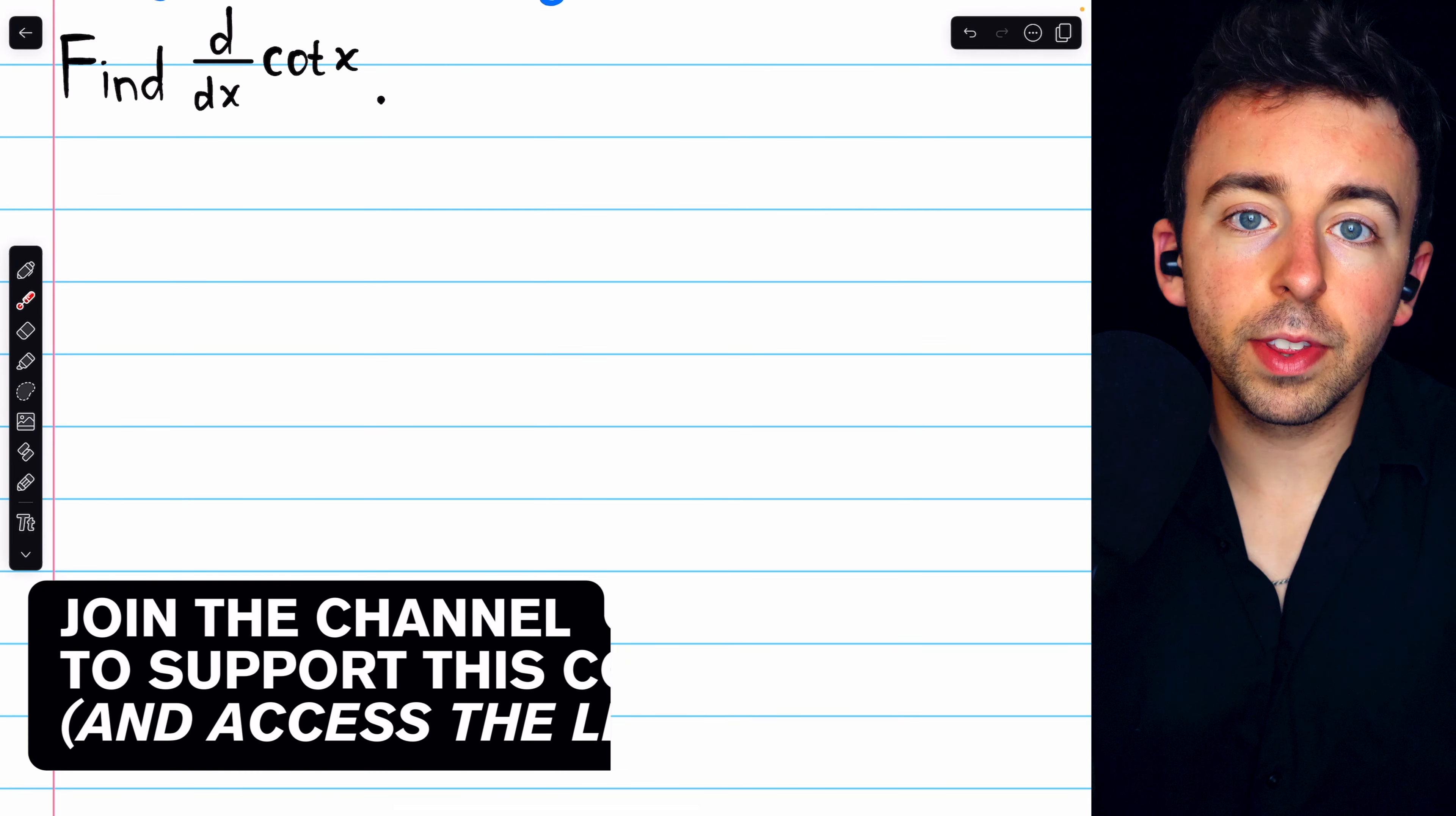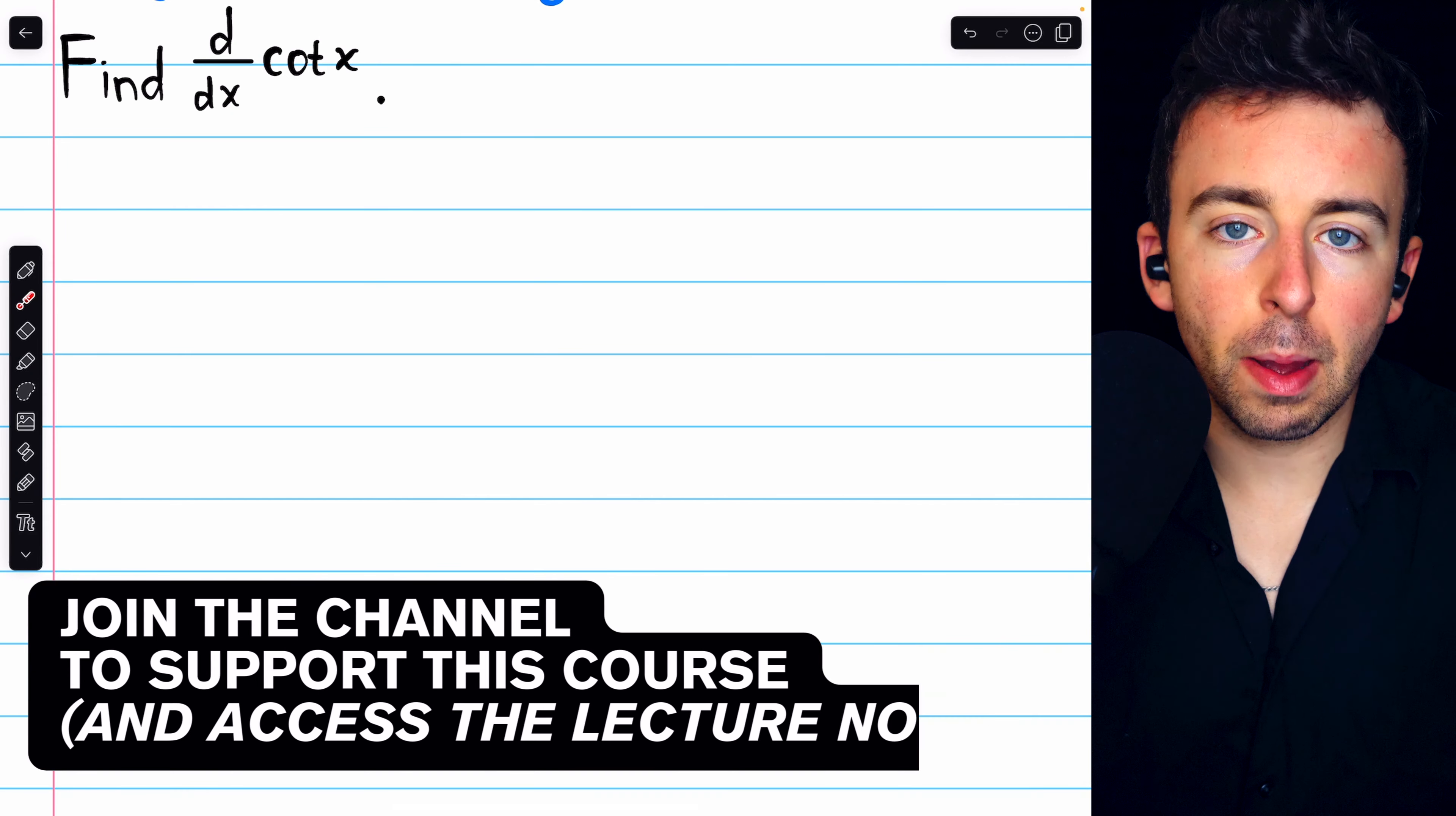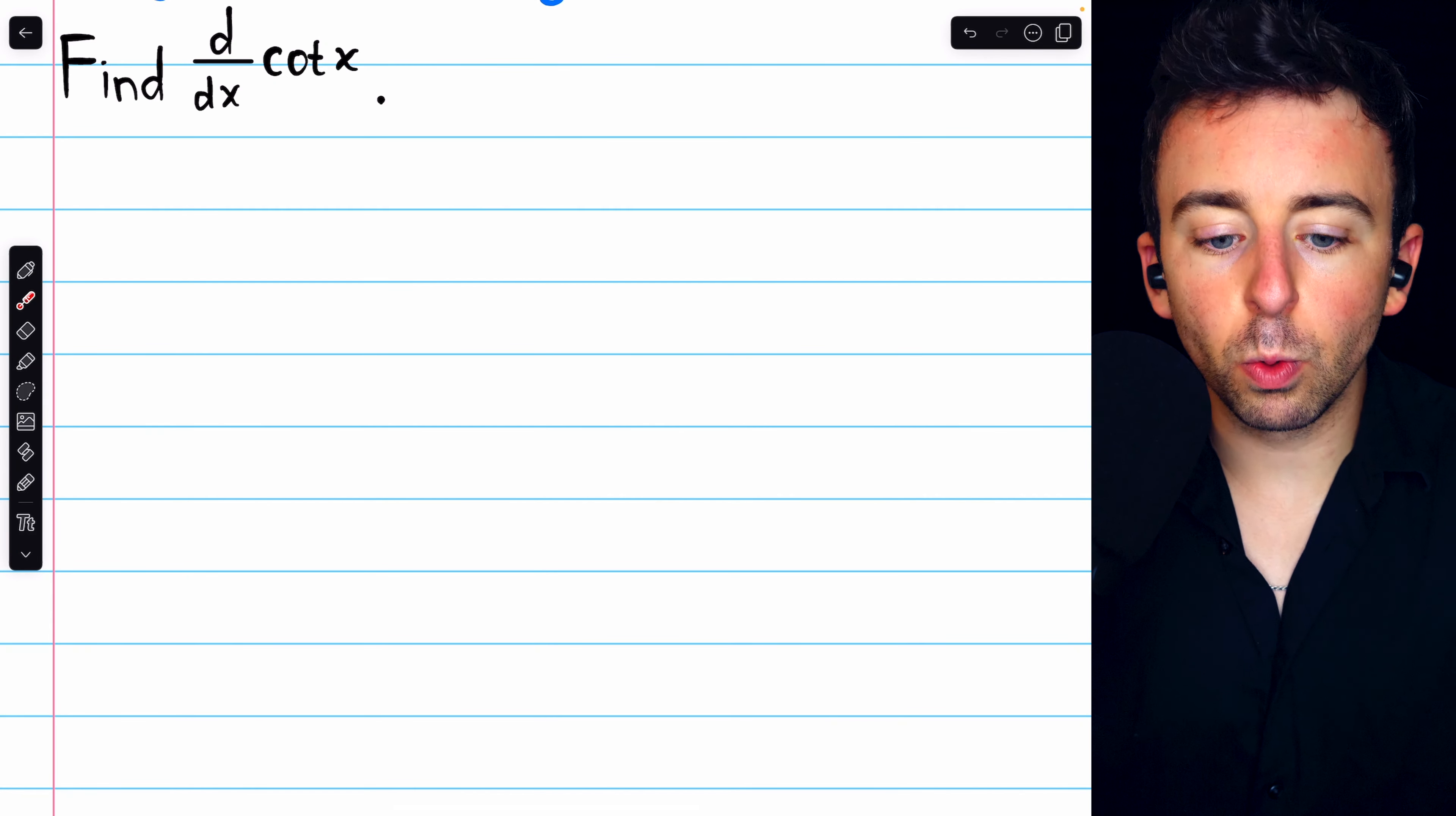Cotangent x is one of the six basic trig functions, so you want to have its derivative memorized. But if you don't know it yet, we can figure it out using the quotient rule.